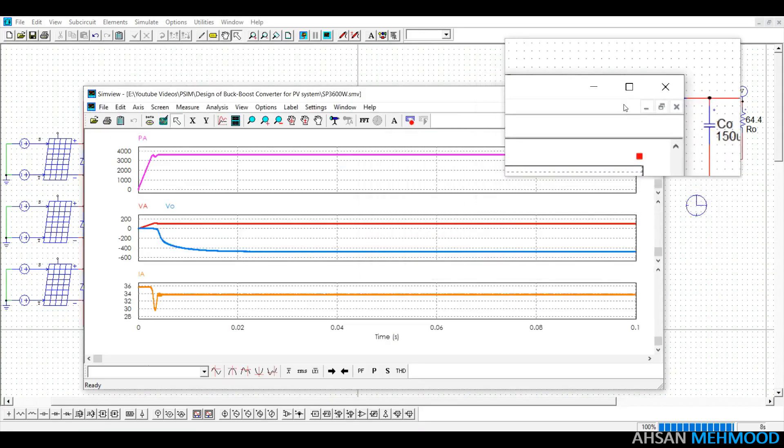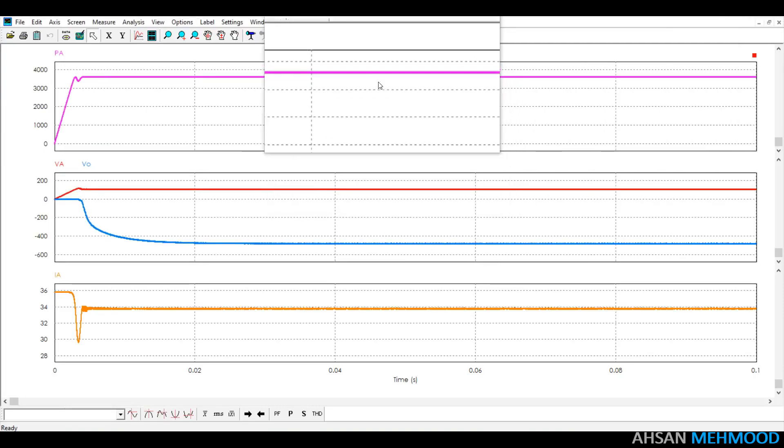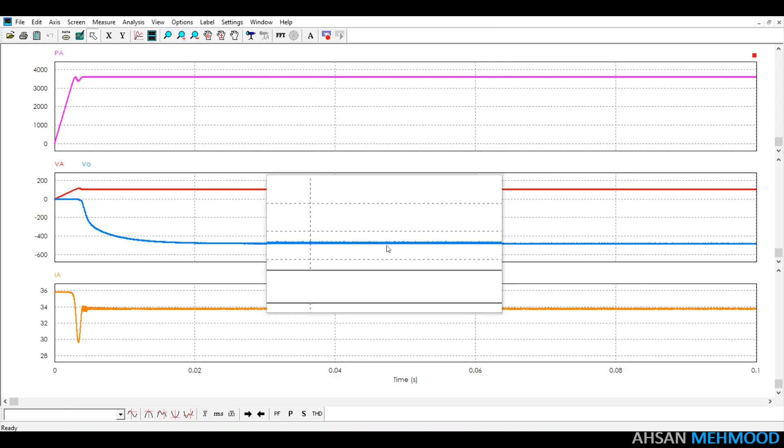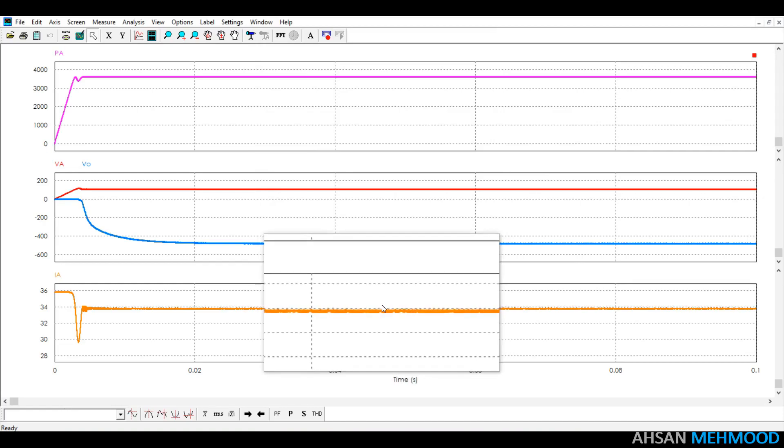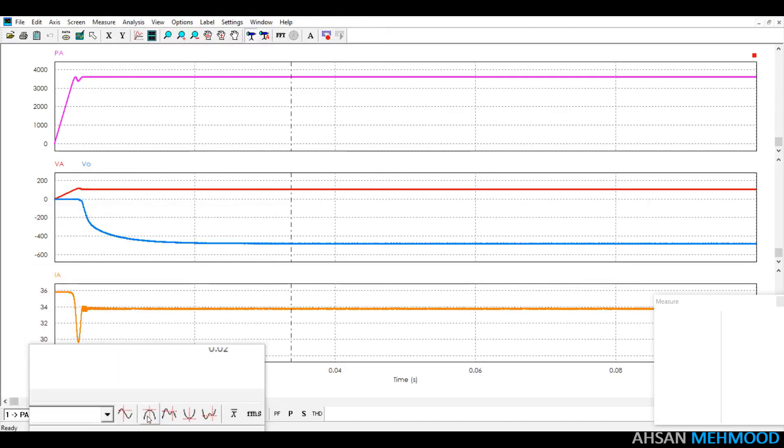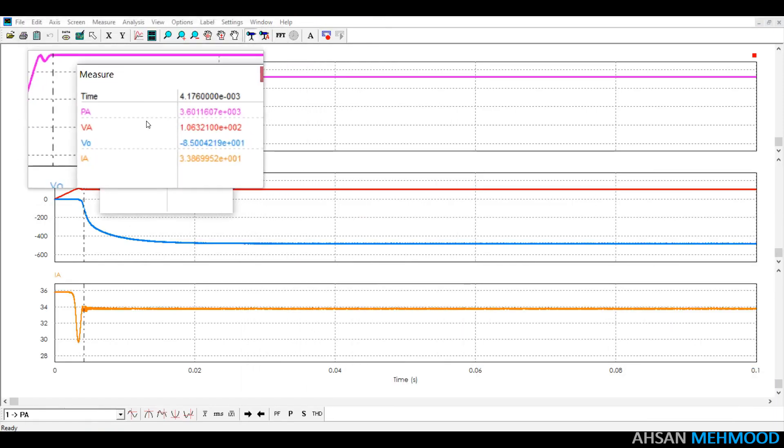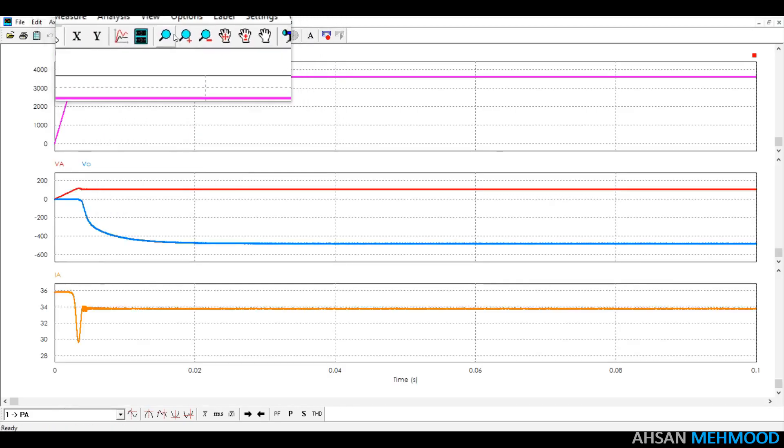The array power, array voltage, load voltage and array current curves are shown here. Array power is depicted in pink, array voltage is depicted in red, load voltage is shown in blue and array current is shown in orange. As you can see the array power is 3600W which is the PV array's maximum power. At this point the voltage and current are 106V and 33.9A respectively. This indicates that our MPP has been successfully tracked.